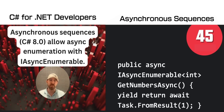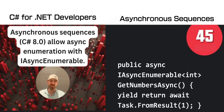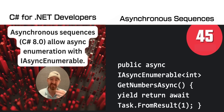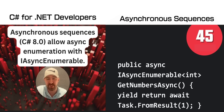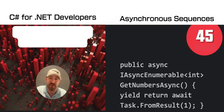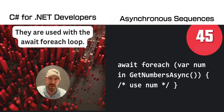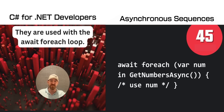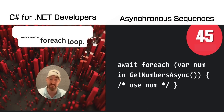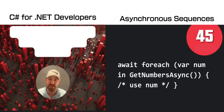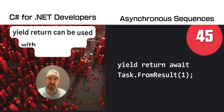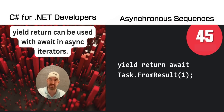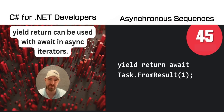IAsyncEnumerable allows you to return sequences asynchronously, just like the yield keyword did with IEnumerable. You can then do await for-each loops, which is pretty cool. Yield return can then be used with await in your async iterators.